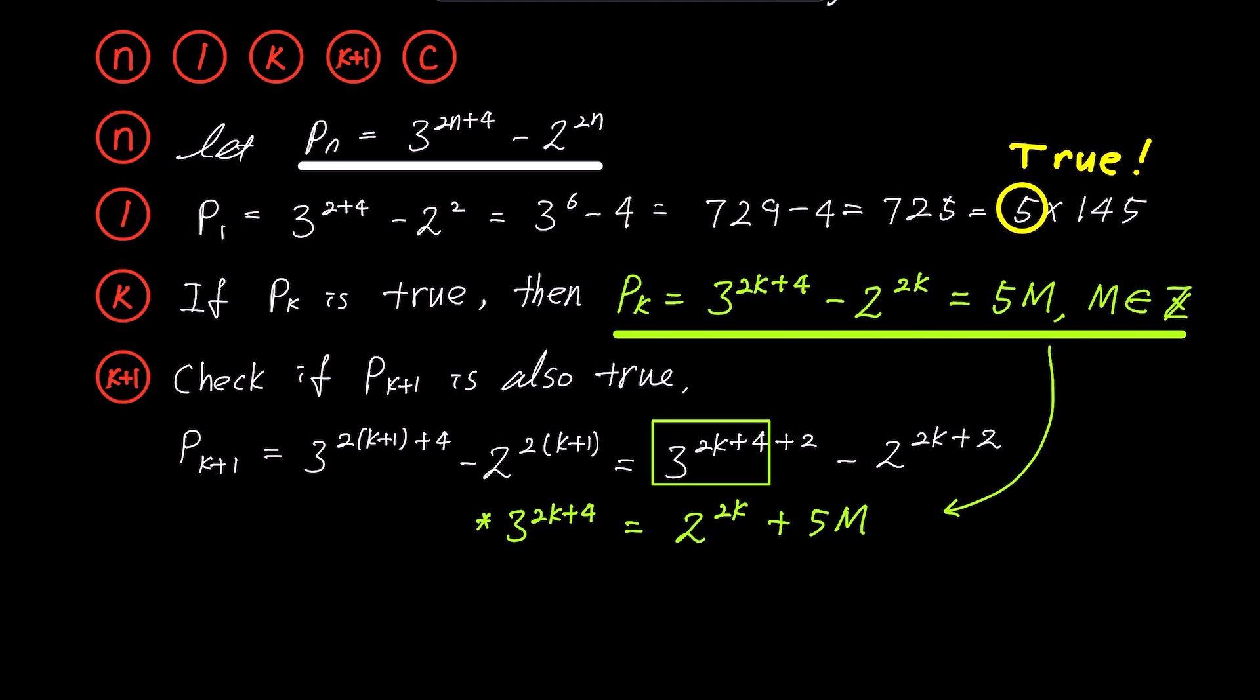Let's express 3 to the power of 2k plus 4 as 2 to the power of 2k plus 5m to facilitate substitution. We'll modify the expression for pk plus 1 slightly, making 3 to the power of 2k plus 4 times 3 squared minus 2 to the power of 2k times 2 squared. Now we'll substitute the expression in the green box. This results in 2 to the power of 2k plus 5m times 9 minus 4 times 2 to the power of 2k.